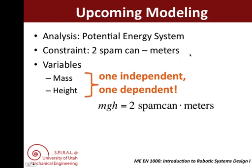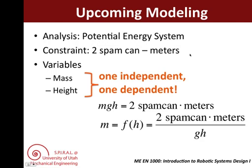For example, we can write the equation for potential energy and set it equal to our constraint. Then we can either choose mass to be our dependent variable as a function of height, or choose height to be our dependent variable as a function of mass. Coming up in class, we will teach you how to take these two variables, along with other design variables, to model your entire potential energy system and use that model to make design decisions.